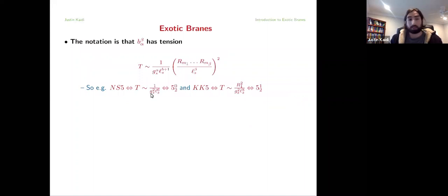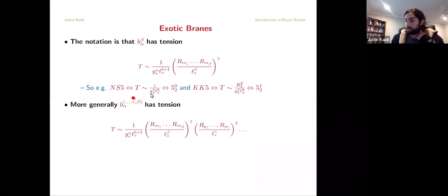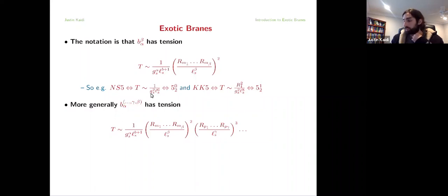The exotic branes we've encountered thus far are actually a very limited set. More generally, one could have exotic branes which have not just R-squared behavior, but R-cubed behavior and R-fourth behavior, and so on. The notation for those is simply to use multiple superscripts in descending order: β captures the number of R-squared directions, γ the number of R-cubed directions, and so on and so forth.